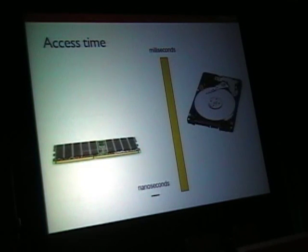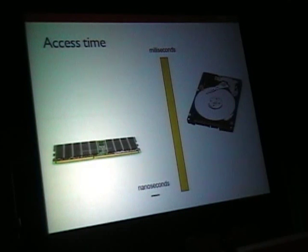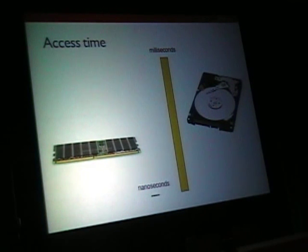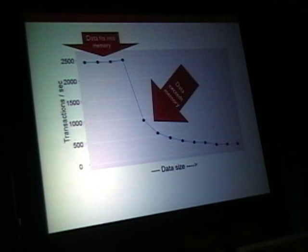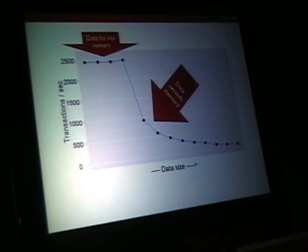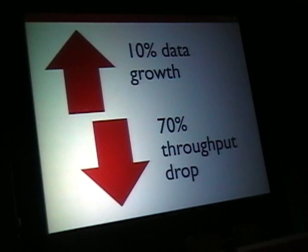There's a very big difference when you speak about memory versus spinning disk: it's nanoseconds against milliseconds — a massive time difference. When our data fits into memory and then occasionally grows and we exceed memory, we have a very significant performance drop. It's kind of an exponential function, and at some tipping point, when we increase data by 10%, we can see like a 70% throughput drop.